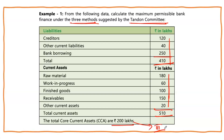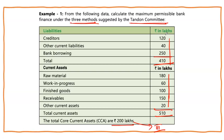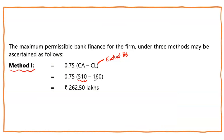Let's see what the first method involves. In Method 1, we arrive at the working capital gap by comparing current assets with current liabilities — but current liabilities here means liabilities excluding bank borrowings, because that's what we are trying to find out. So creditors plus other current liabilities of 160 is the current liability considered. Working capital gap = 510 minus 160.